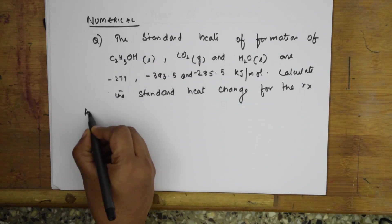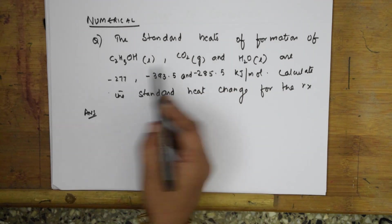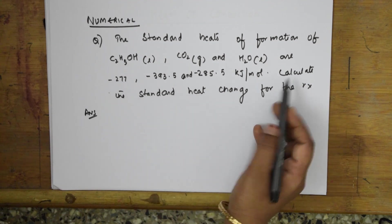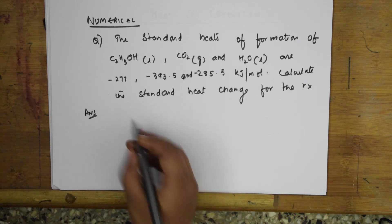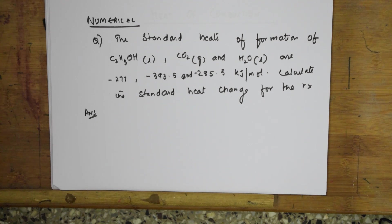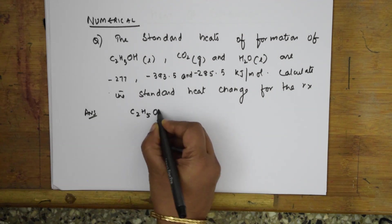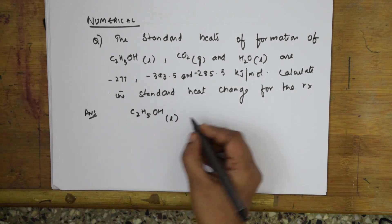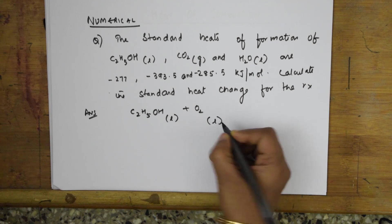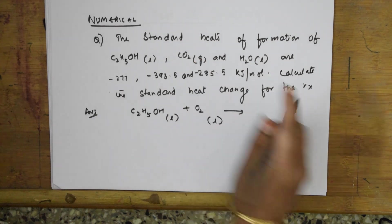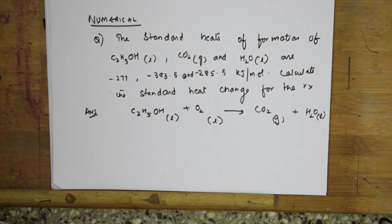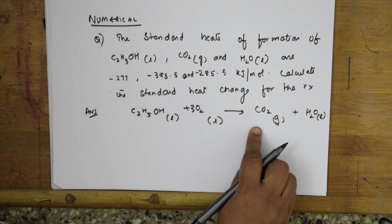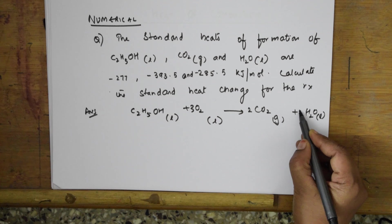Let us do a numerical based on this. The standard heats of formation of ethanol, carbon dioxide, and water are given. Calculate the standard heat change of the reaction. First, write the reaction. Ethanol, C2H5OH, is in liquid state, combining with oxygen — also in liquid state — forming carbon dioxide in gaseous state and water in liquid state. Let us balance this: oxygen gets 3, CO2 gets 2, and H2O gets 3.